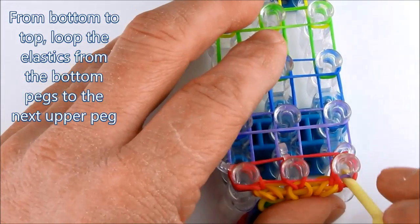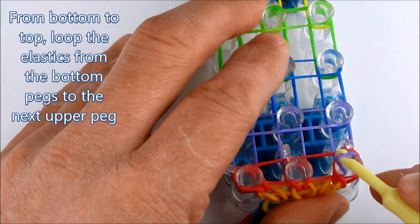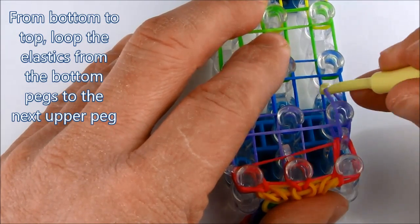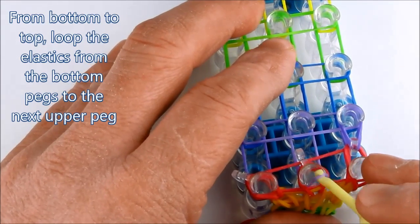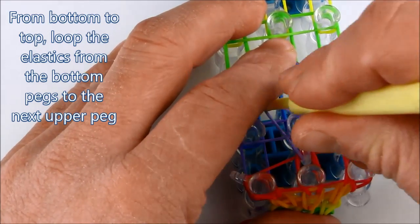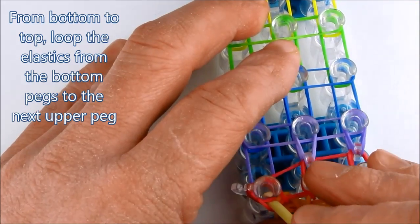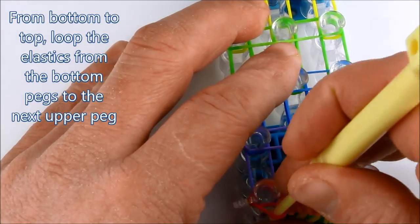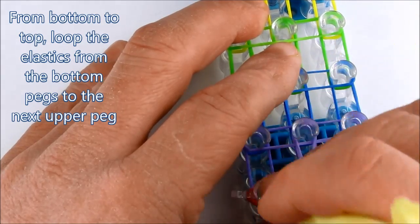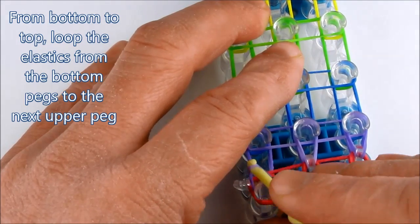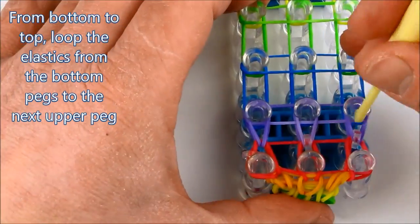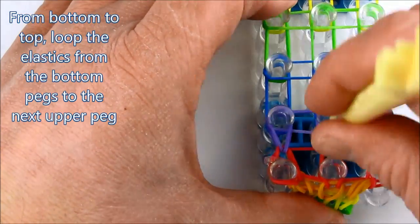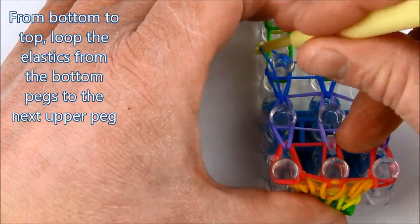So now we loop as we did previously, from bottom to top, loop the elastics to the pegs immediately above it. And we continue this looping process until we reach the top of the loom.